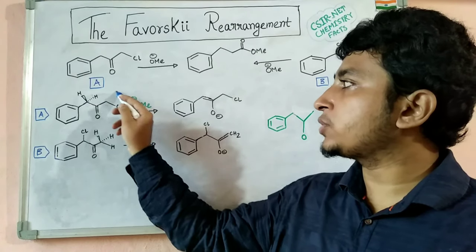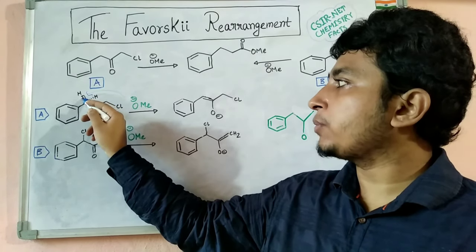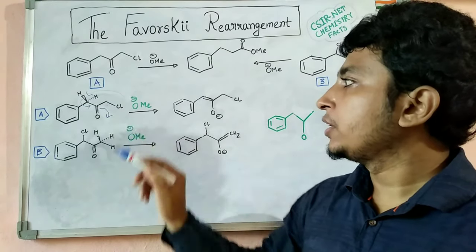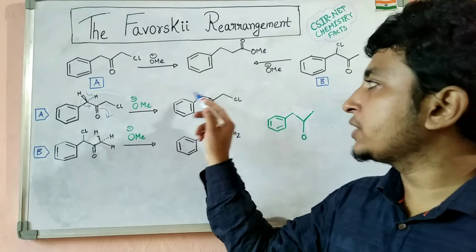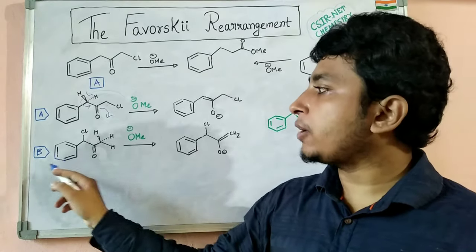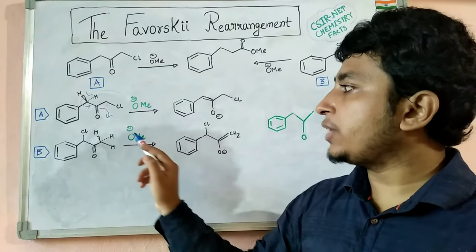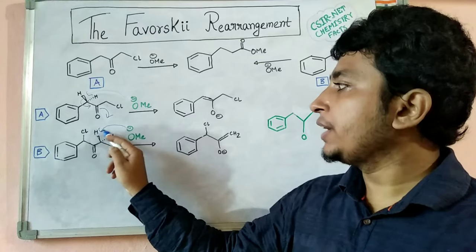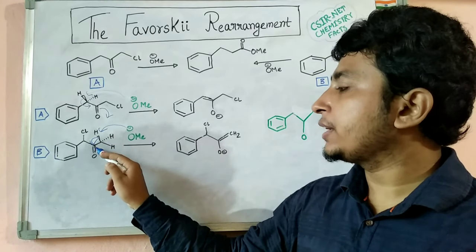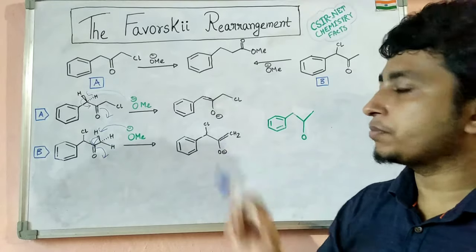That negative charge would be destabilized because of electron-electron repulsion between the negative charge and the chlorine lone pair. So what will happen actually is this negative charge will take this proton, the bonding electron pair will come here, and this bond will open up — giving this enolate. In the case of compound B, the base abstracts the proton from here, the bonding electron pair comes here, this bond opens up, and this enolate forms.